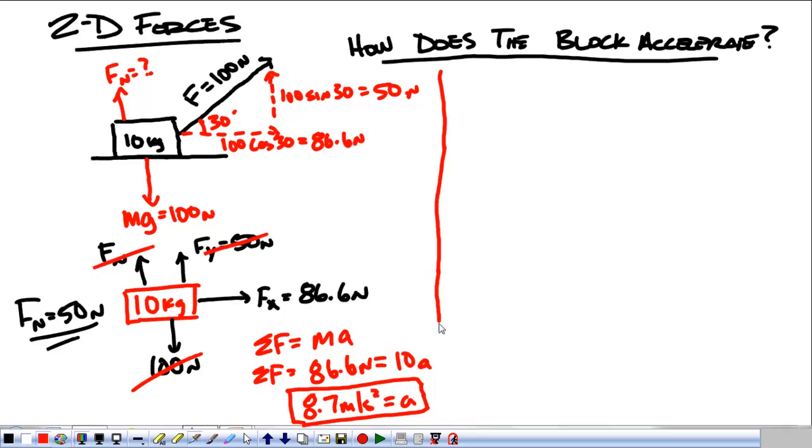Now, to make things even more complicated, what if we had friction? So what if mu static was 0.5 and mu kinetic was 0.25? What would happen then?